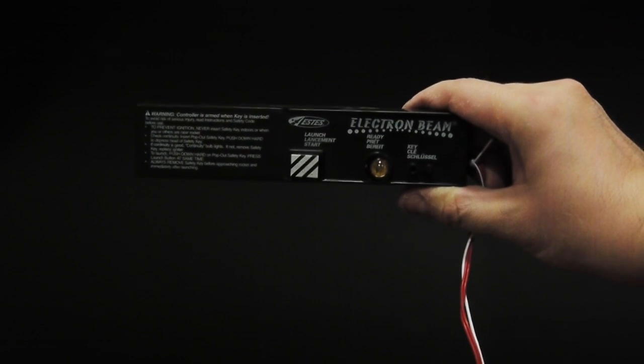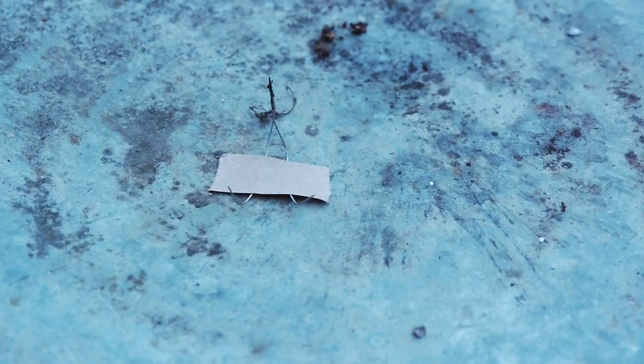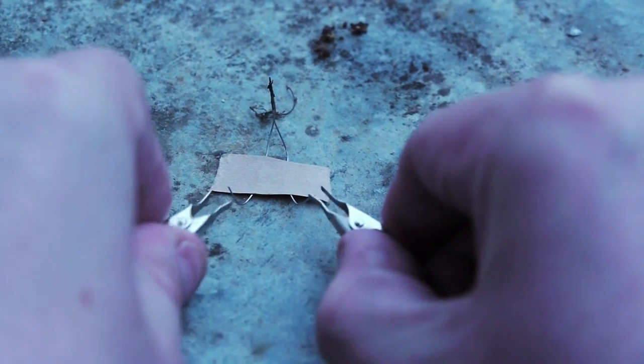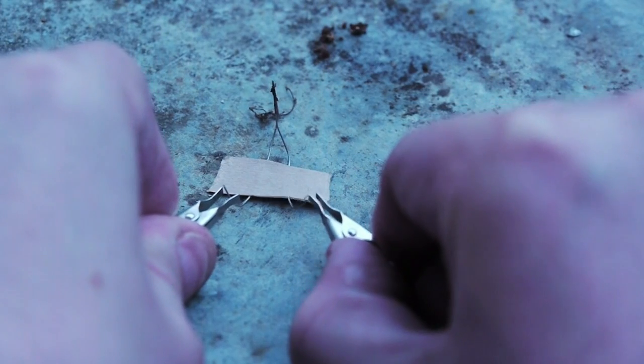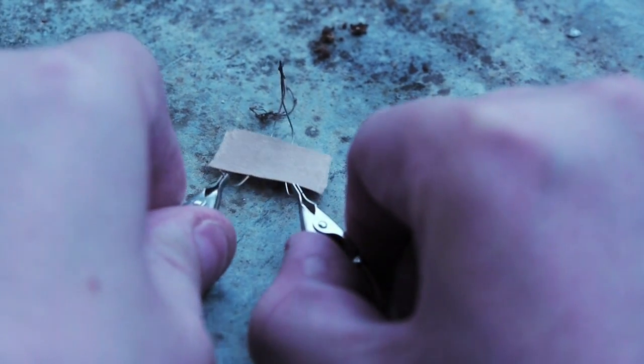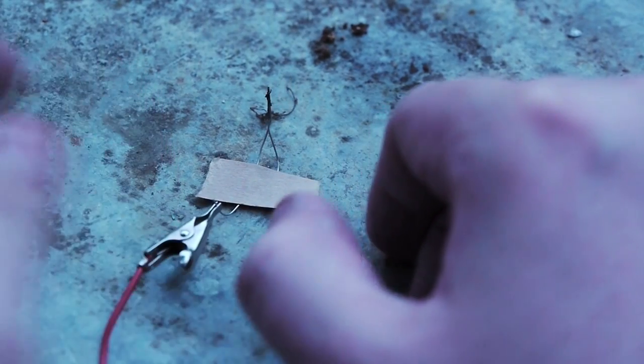Now I've got my hands on a model rocket engine igniter. Now this is going to allow me to get a safe distance away from the egg and still detonate it. Now what you have to do is hook the two prongs of the igniter to a fuse that you have. Once it's connected and you press the button, it'll cause a spark. This spark, once inside the egg, will cause it to explode.